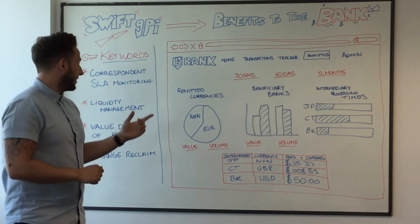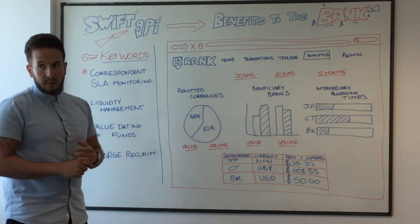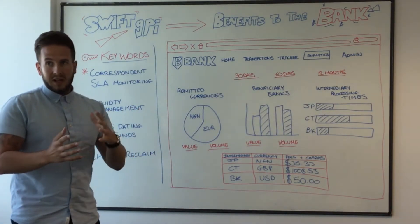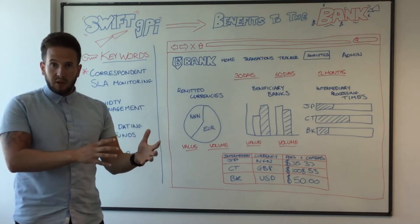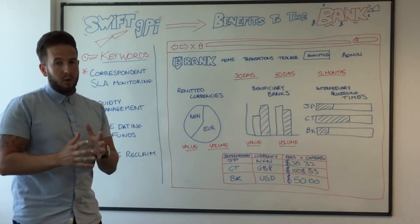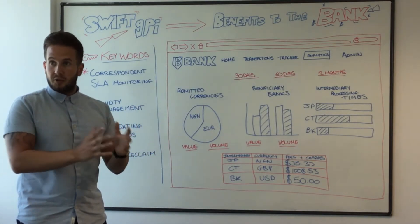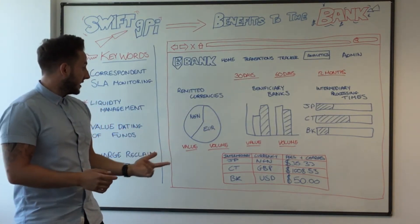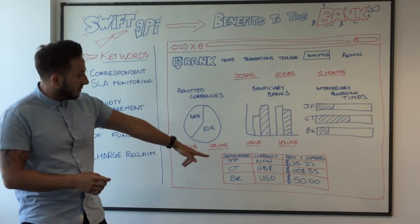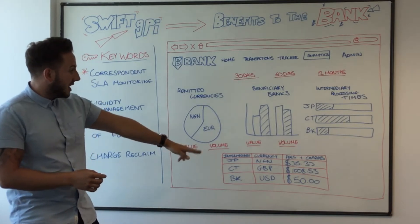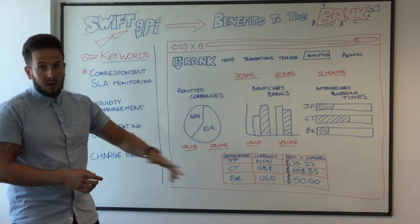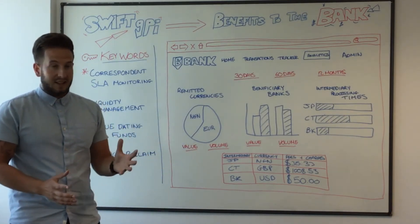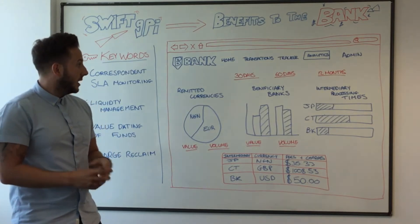You've got things like looking at overall currencies that they remit — what markets am I heavily involved in, where do I put most of my nostro traffic through? And in turn, that's going to give them a lot of data around charges and fees. All this is available in the SWIFT GPI tracker that the bank has access to.